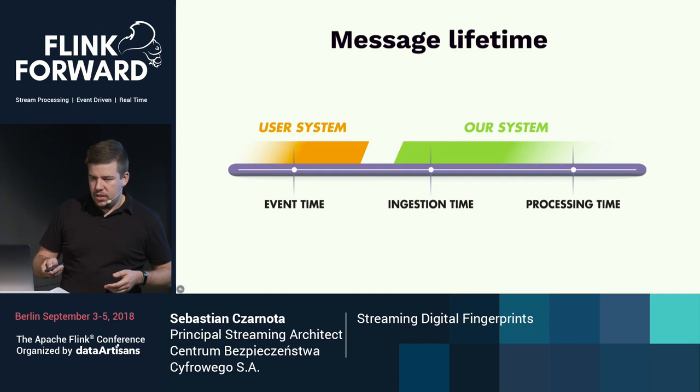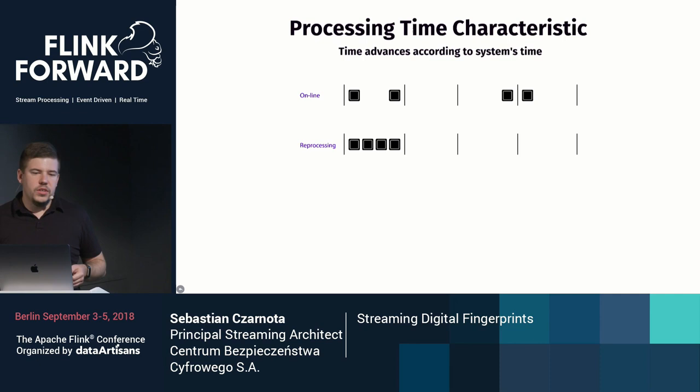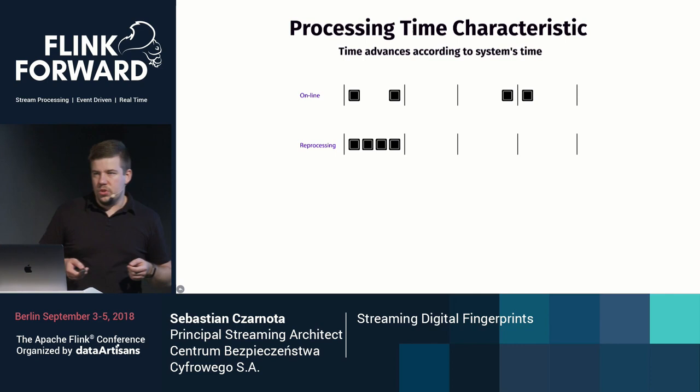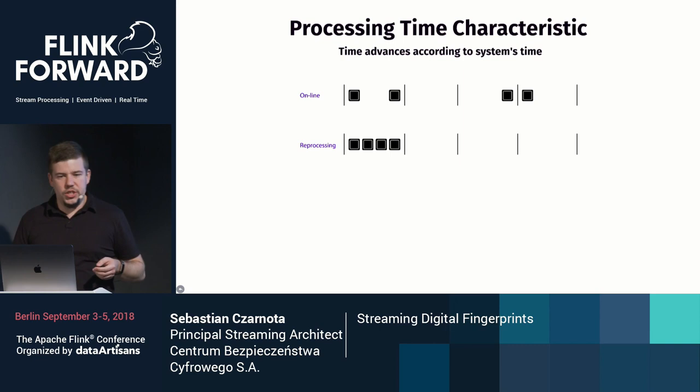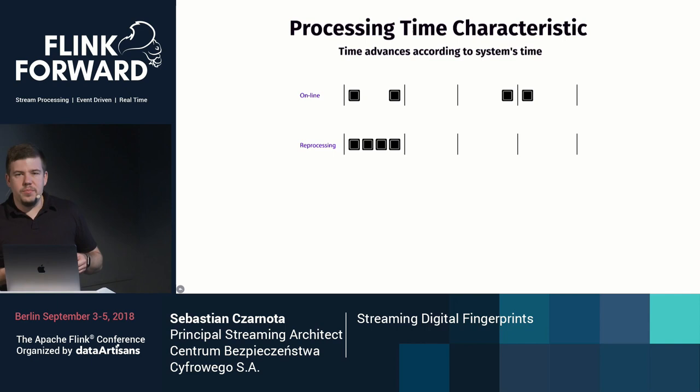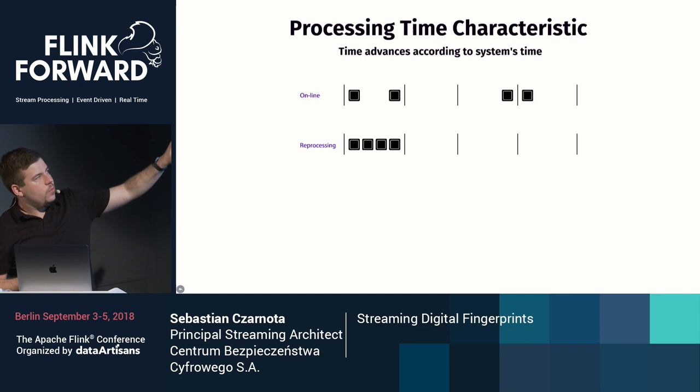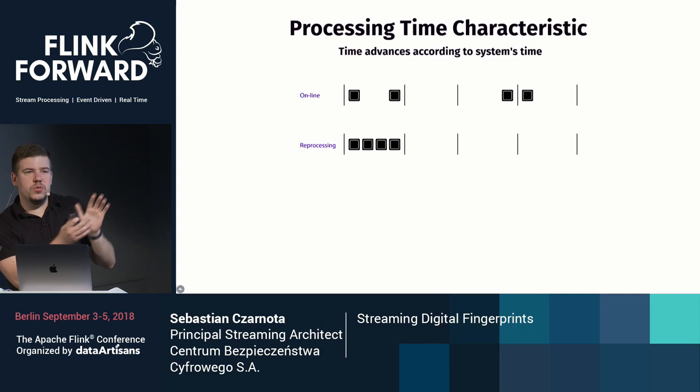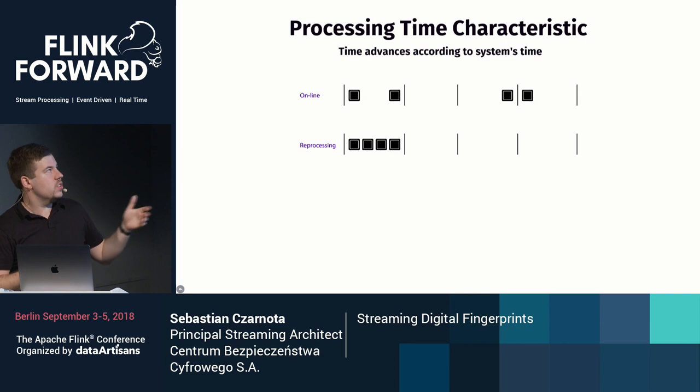The simplest way of advancing time in Flink is using the processing time characteristic, where all timestamps from event time and ingestion time are not used — only the system clock time of the machine where the Flink application runs. However, there is a big drawback: when we have time-based operations, the time windows are the same in processing time but the events are cramped together in reprocessing. So we are not getting the same layout of windows using processing time in a reprocessing schema.